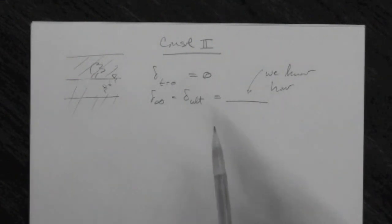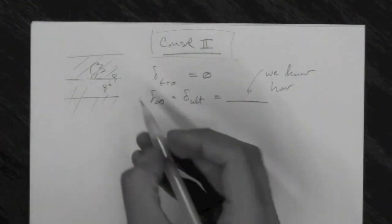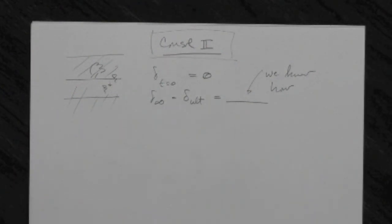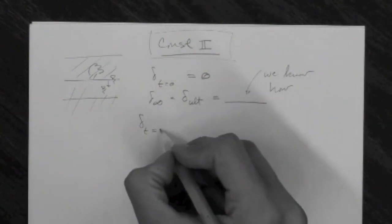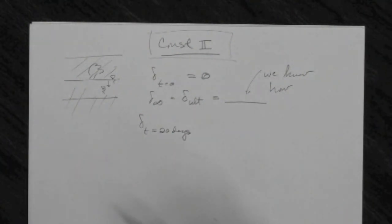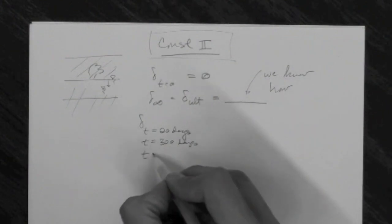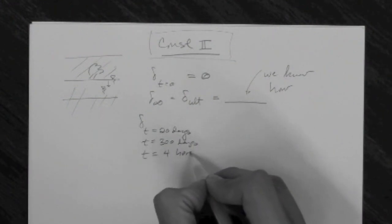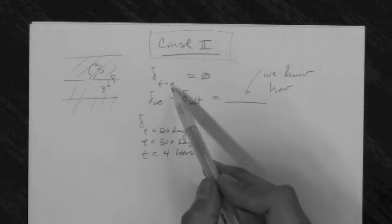Now the topic of Consolidation Part 2 is essentially the same as what we've talked about so far, but there is a significant difference: we are in search of the deformation at any time — for example, a time equal to 20 days after the fill is placed, or after the water table is lowered, or a time equal to 300 days, or a time equal to 4 hours, etc.